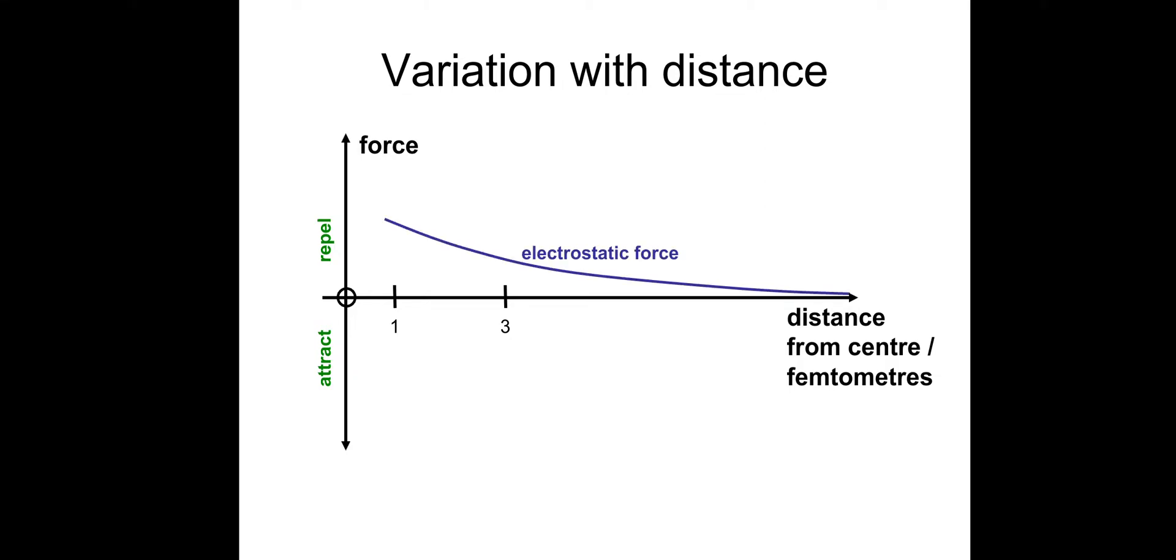So here's a variation with distance. Here's a graph representation. You might be asked to sketch this in an exam. So the electrostatic force looks like this. So as distance increases, the force decreases with it. Strong nuclear force. So below 0.5 femtometers, the force is repelling to stop the nucleus from caving in on itself. That's this region.